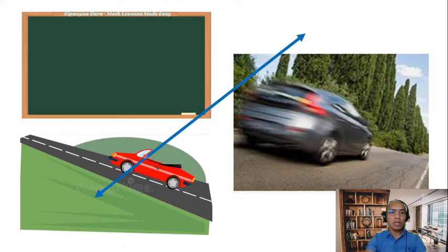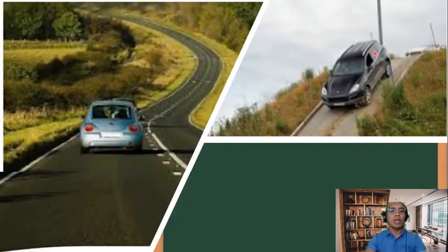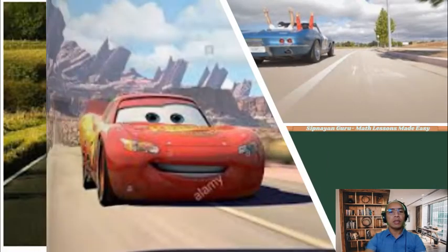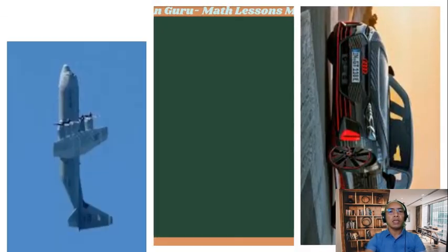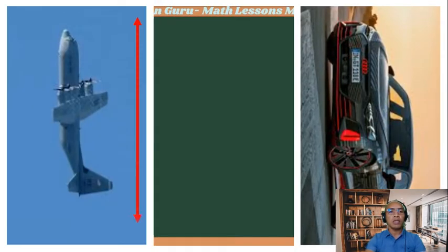In this case, this is a positive slope, so it is increasing — the cars are going up, so the slope of the road is positive. In this case, the road is going down, so the slope is negative. This is horizontal, which means the slope is zero. And lastly, it is vertical, so the slope is undefined.